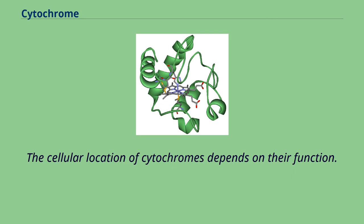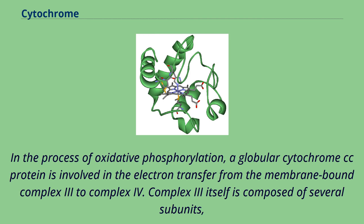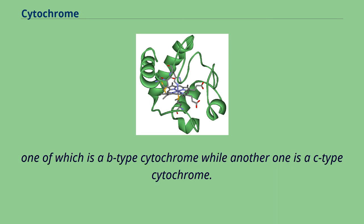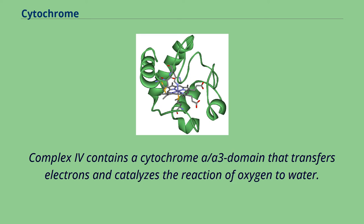The cellular location of cytochromes depends on their function. They can be found as globular proteins and membrane proteins. In the process of oxidative phosphorylation, a globular cytochrome C protein is involved in electron transfer from the membrane-bound complex III to complex IV. Complex III itself is composed of several subunits, one of which is a B-type cytochrome while another is a C-type cytochrome, both involved in electron transfer within the complex. Complex IV contains a cytochrome A-A3 domain that transfers electrons and catalyzes the reaction of oxygen and water.